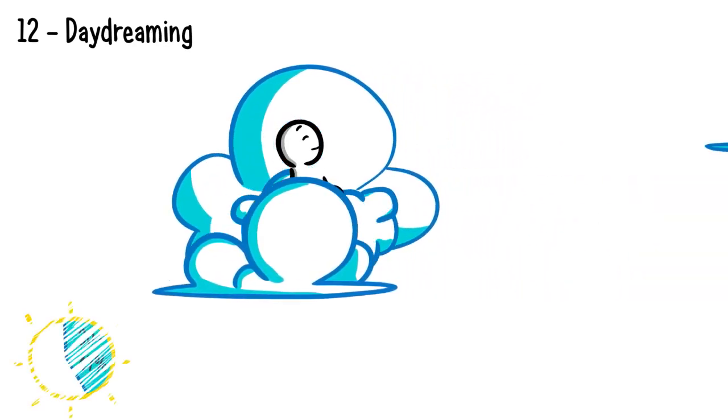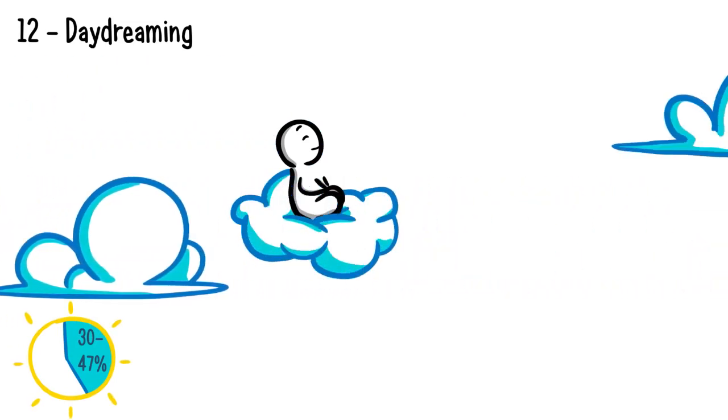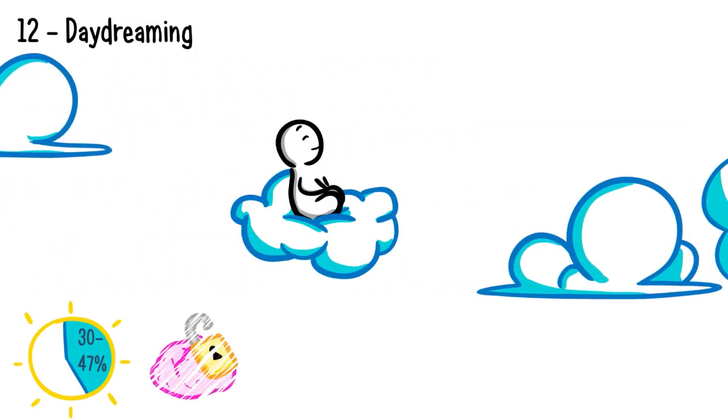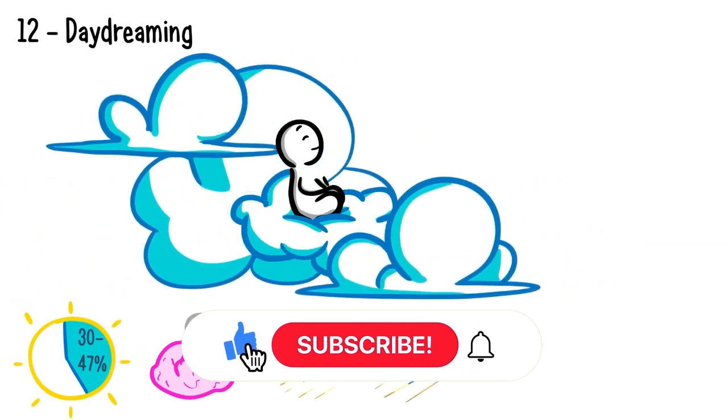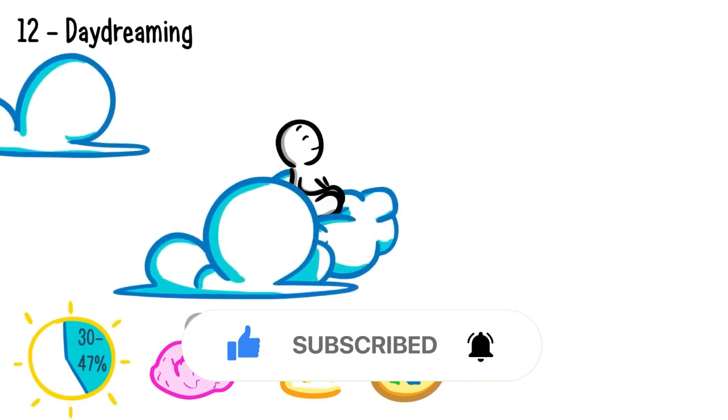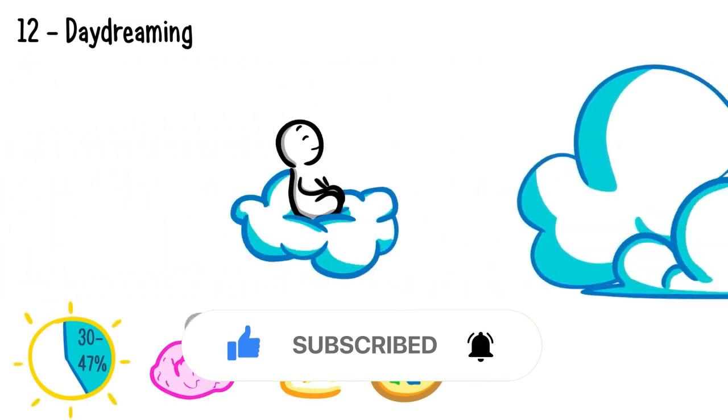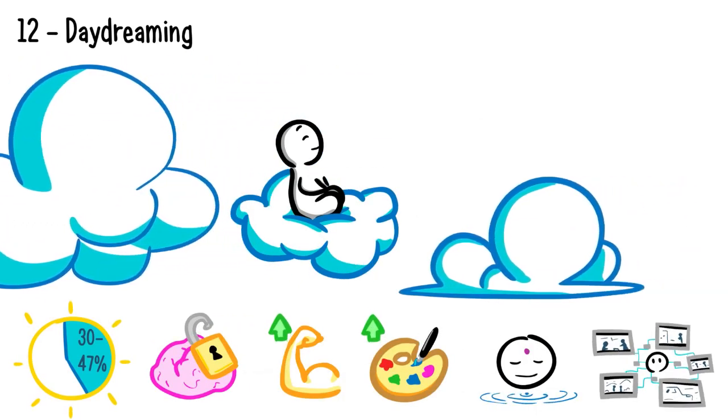Fact number 12. Daydreaming. Did you know you can daydream 30-47% of your day? Why do you do this? Well, it allows your brain to wander freely. Research suggests that daydreaming increases productivity and boosts creativity. Scientists think daydreaming also allows you to understand your thoughts and help you exercise different scenarios in your brain.